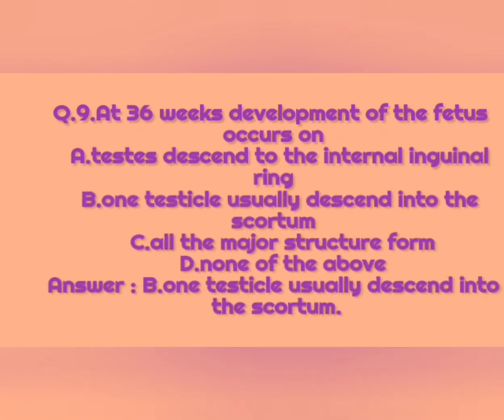Question number nine: At 36 weeks, development of the fetus occurs on — option A: testes descend to the internal inguinal ring, option B: one testicle usually descends into the scrotum, option C: all major structures form, option D: none of the above. The correct answer is option B, one testicle usually descends into the scrotum.